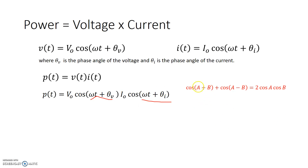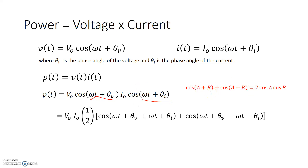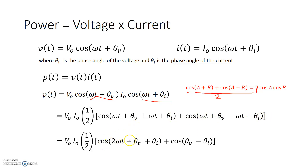Using that expression, let's simplify further. We have v0·i0 and cosine a · cosine b. Moving the 2 down, cosine(ωt + θ_v) is a and cosine(ωt + θ_i) is b, giving us cosine(a+b) plus cosine(a−b). This simplifies to: (v0·i0/2)·cos(2ωt + θ_v + θ_i) + (v0·i0/2)·cos(θ_v − θ_i). This is called instantaneous power, giving the power at any given time t.